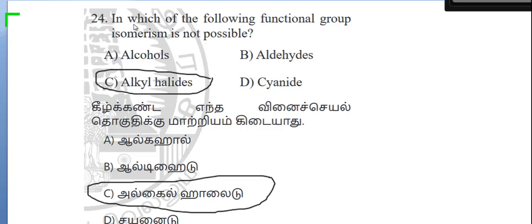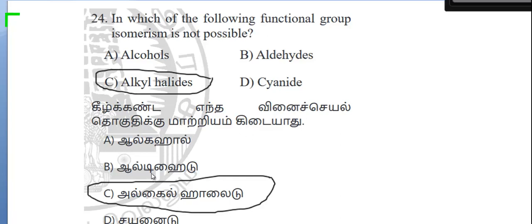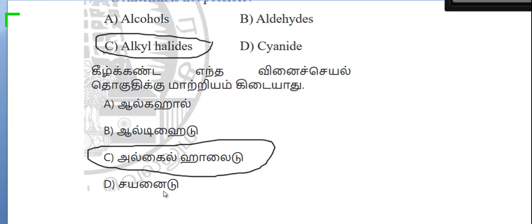The right answer is alkyl halides. In which of the following, functional group isomerism is not possible? Alkyl halides — isomerism is not possible for alkyl halides. Alcohols, aldehydes, and cyanides can show functional group isomerism, but alkyl halides cannot.